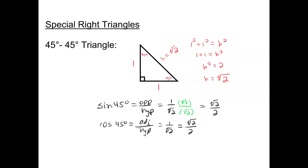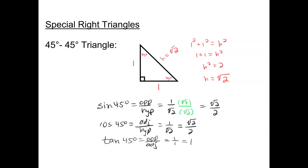The last one is tangent. The tangent of 45 degrees is opposite over adjacent. When I look at my triangle for 45 degrees, opposite over adjacent is going to be 1 over 1, which is just 1. So the sine of 45 and the cosine of 45 are both radical 2 over 2, and the tangent of 45 is 1.